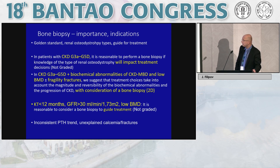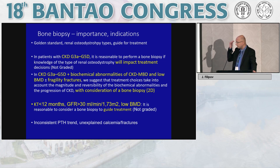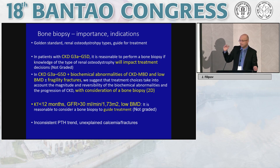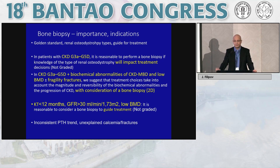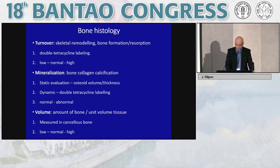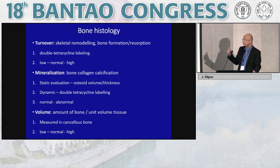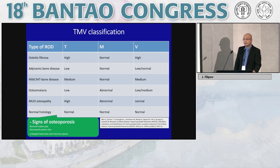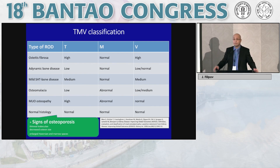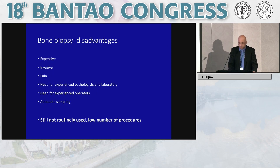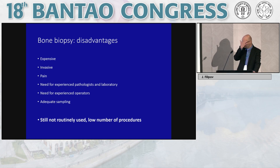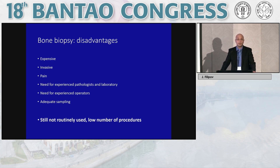Bone histology is regarded as the gold standard for diagnosing renal osteodystrophy. The KDIGO guidelines suggest bone biopsy when it will guide treatment. The TMV classification (turnover, mineralization, volume) identifies six types of renal osteodystrophy. However, biopsy is expensive, painful, and invasive; it requires expert pathologists and operators for adequate sampling, resulting in a relatively low number of procedures performed annually.